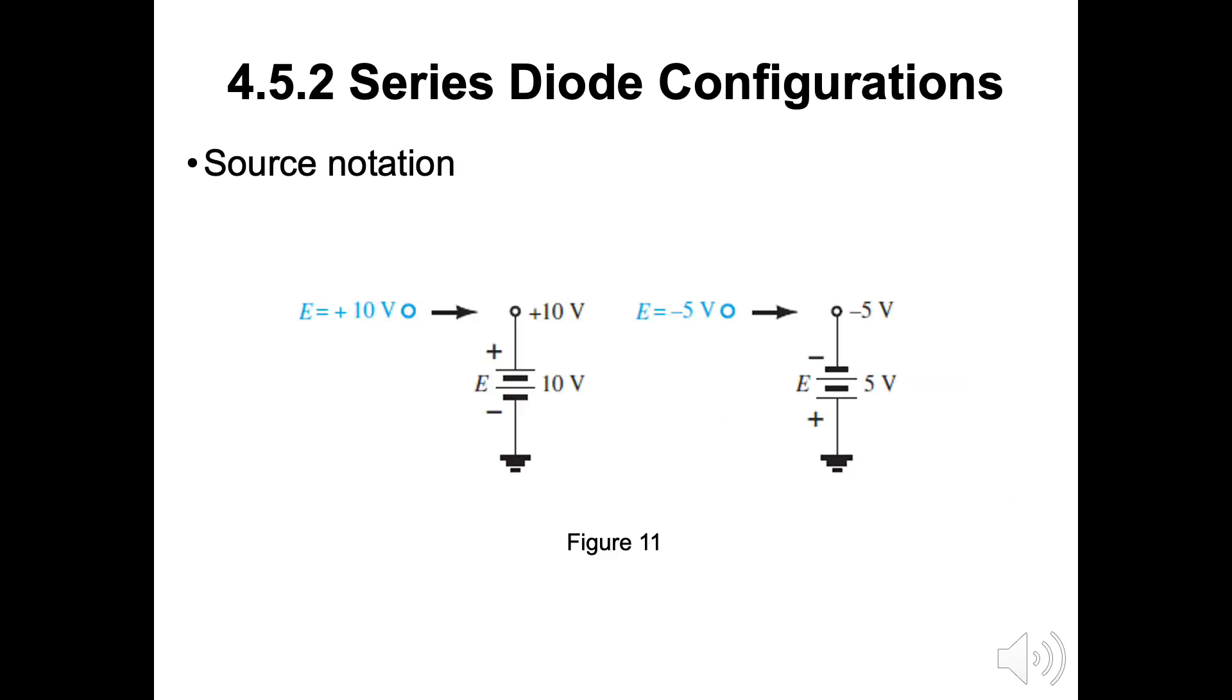Here, source notation is quite important when we are dealing the equivalent circuit for diode. Careful with the signage of the E. The bottom part is considered as the ground.